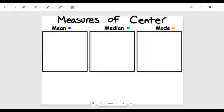So when we talk about measures of center, we're talking about having a data set, meaning a list of numbers and being able to find the middle of those numbers. And there's three different ways in which we find the middle. They're labeled right here for you: the mean, the median and the mode.